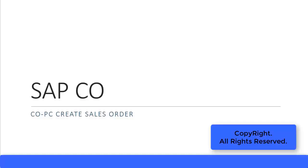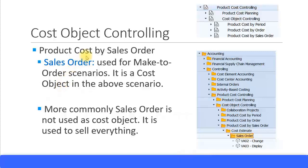In this presentation we will look at creating a sales order. We are still in the cost object controlling section, and in that the third section is product cost by sales order. Product cost by sales order means that you are using the sales order as a cost object. This scenario is mainly used for customized or make-to-order scenarios — if you have a custom order not part of your standard repetitive manufacturing environment, then you use product cost by sales order.